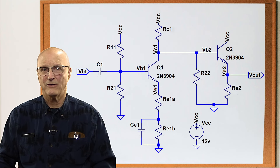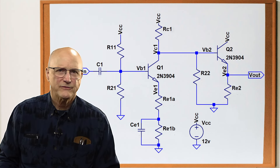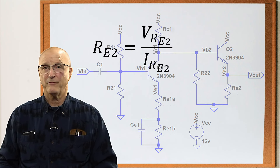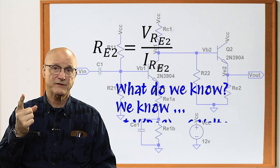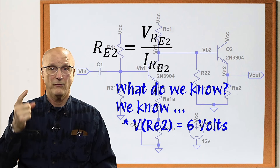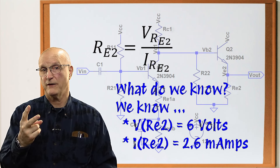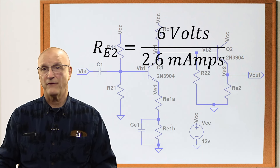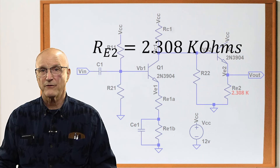Now we can calculate the value of the emitter resistor RE2. Ohm's law tells us that RE2 is equal to the voltage across it divided by the current through it. We know that the voltage across the emitter resistor, VRE2, is 6 volts by our design constraint, and we know the current through it, IRE2, is 2.6 milliamps from our last calculation. So our emitter resistor value is equal to 6 volts divided by 2.6 milliamps, which gives us a value of 2.308 kΩ.